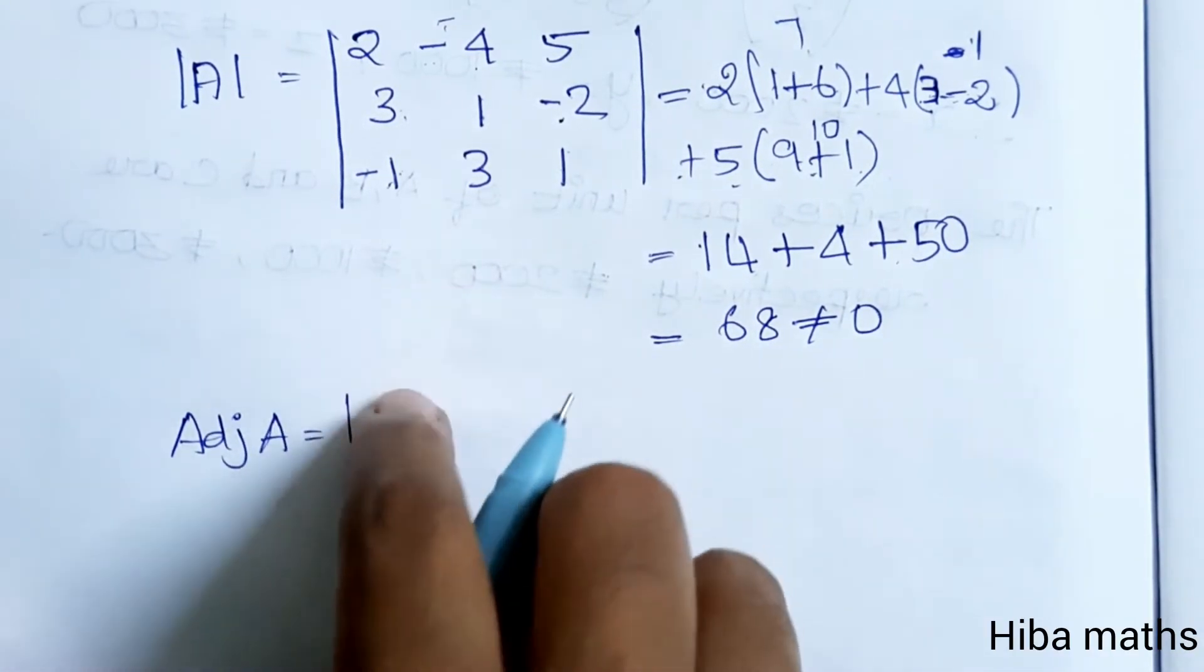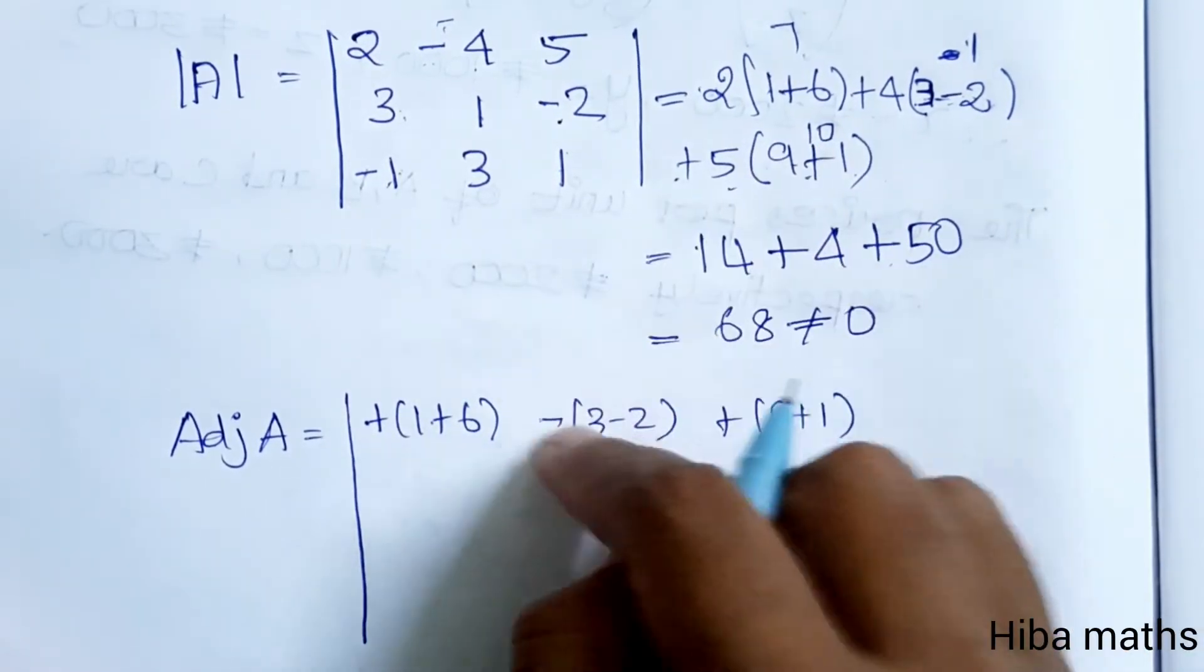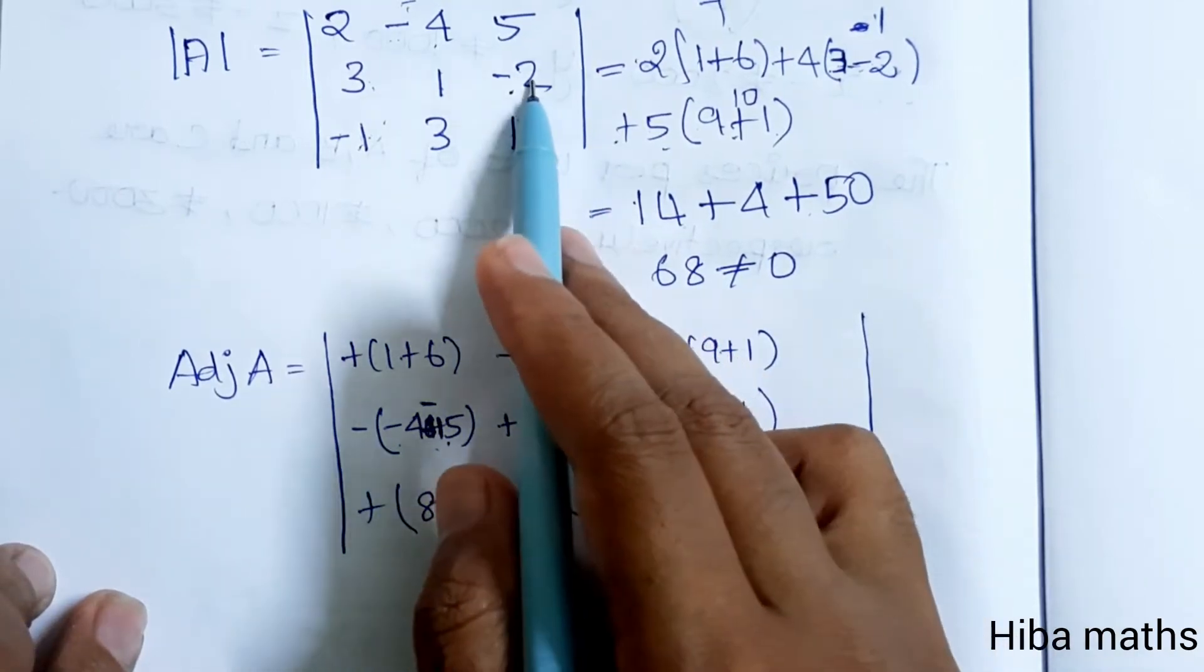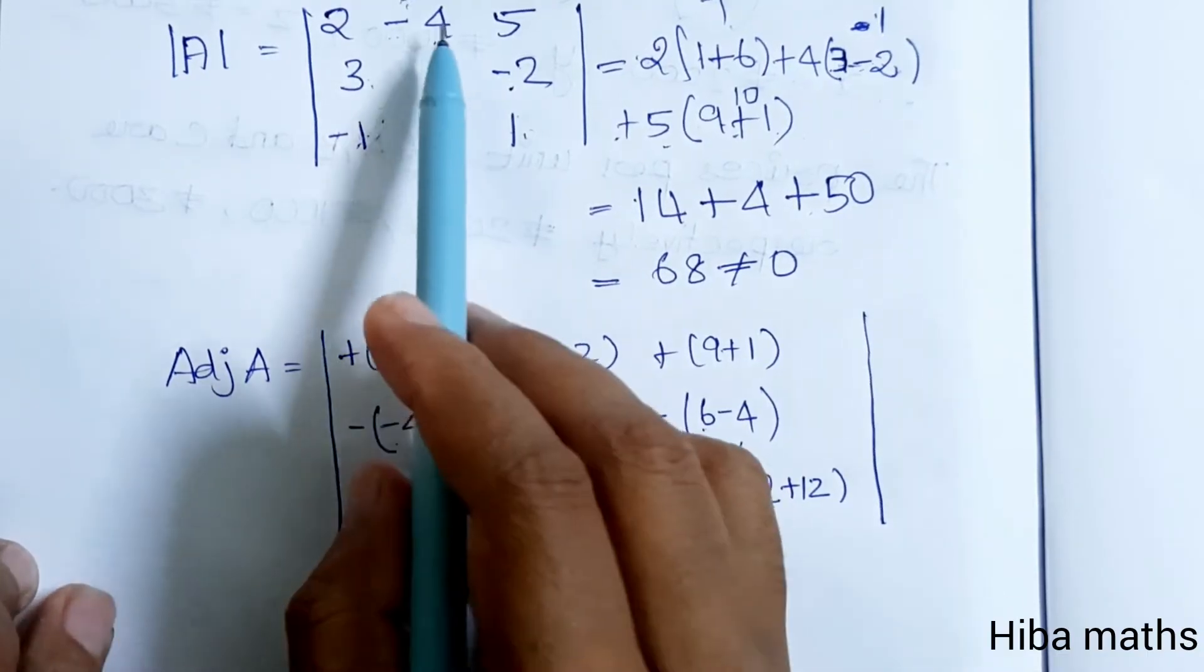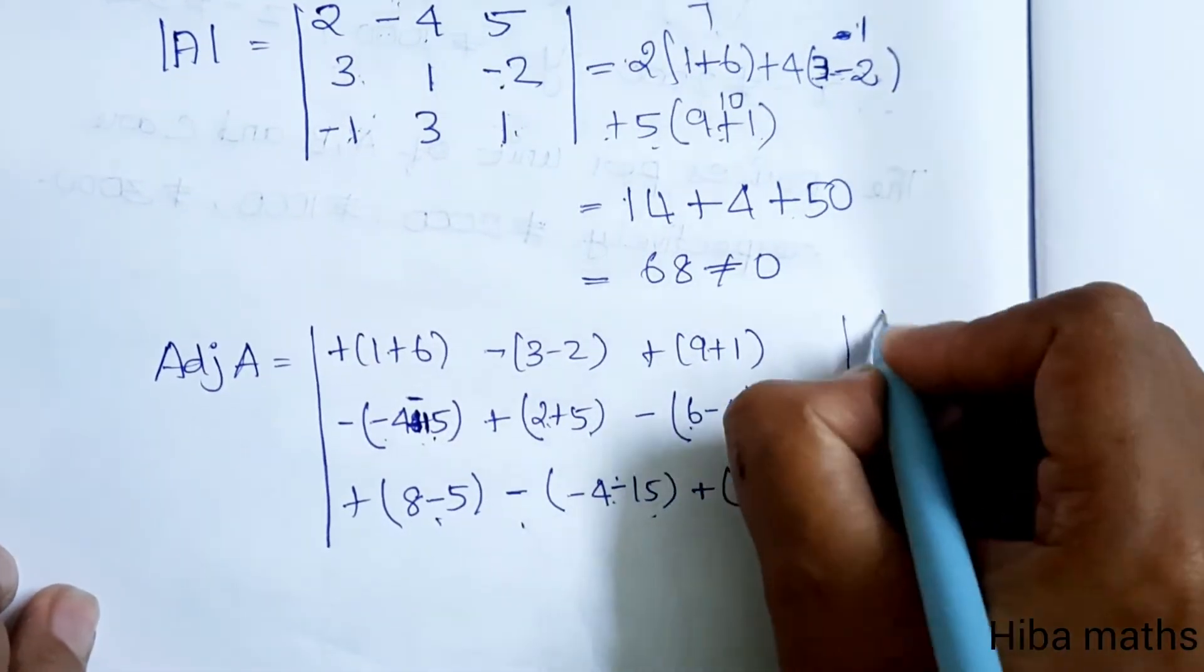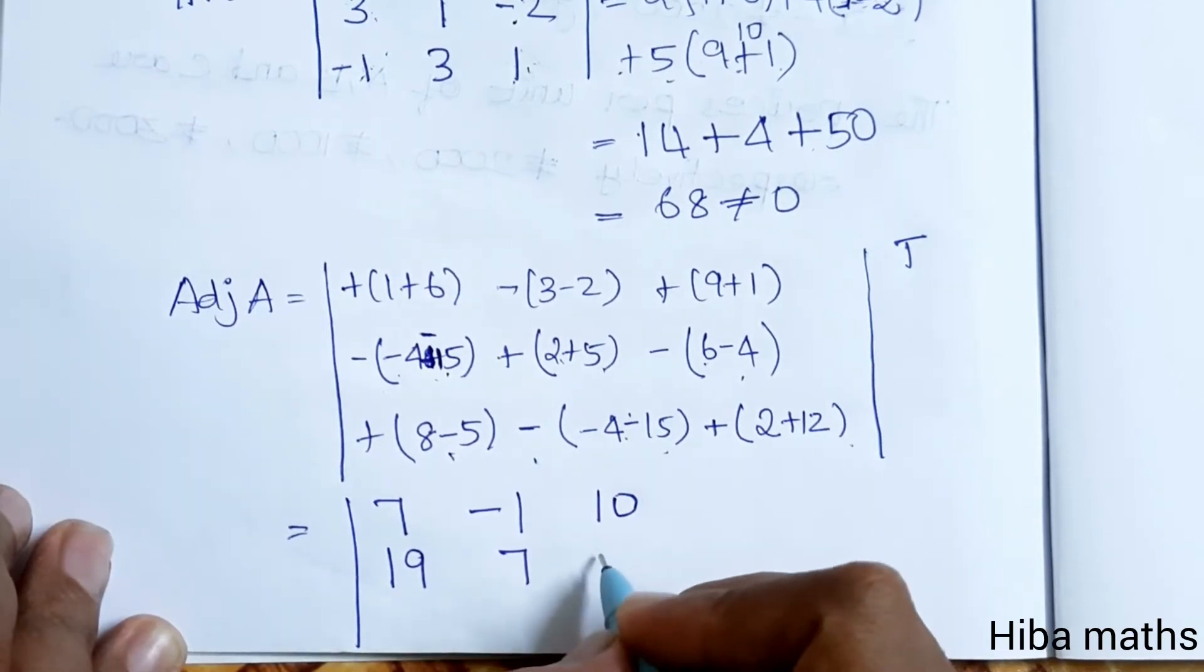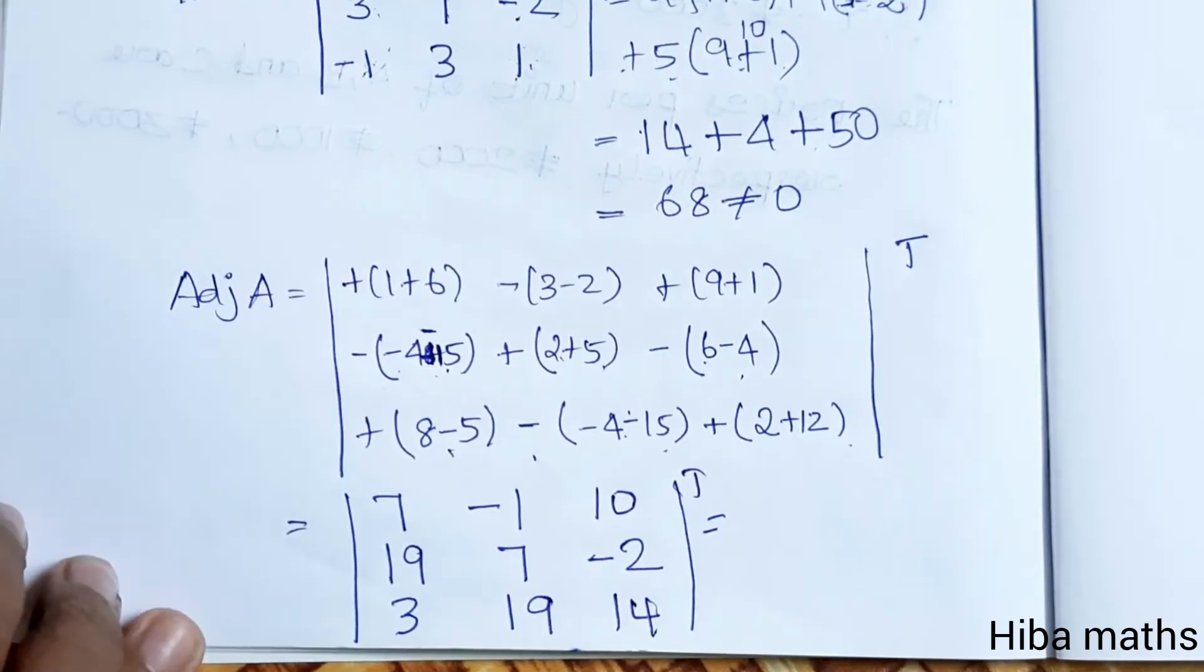Adjoint of A is cofactor first then transpose. Cofactor: first line 1 plus 6 is 7, minus 3 minus 2 is minus 1, 9 plus 1 is 10. Second line minus 4 minus 15 is minus 19, 2 plus 5 is 7, minus 1 minus 6 is minus 2 plus 8 is 3. Third line minus 4 minus 15 is 19, 2 plus 12 is 14. After transpose, adjoint is 7, 19, 3; minus 1, 7, 19; 10, minus 2, 14.